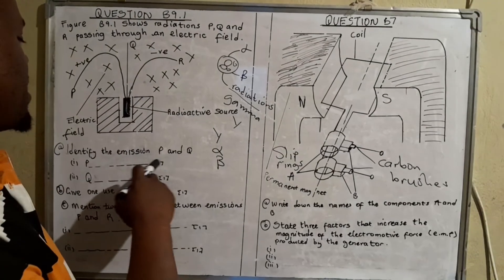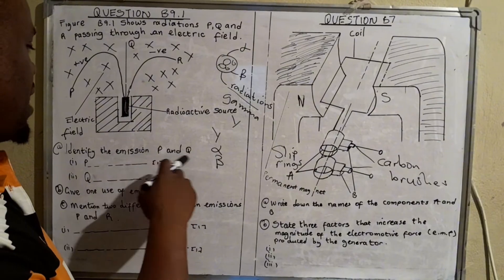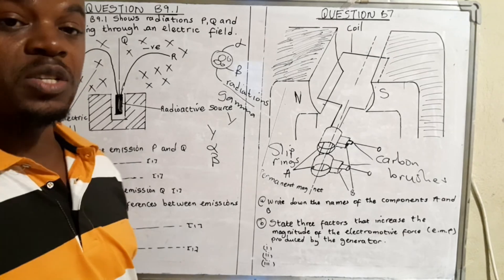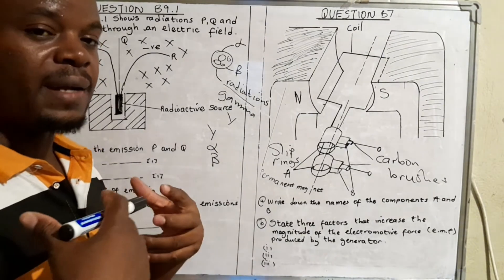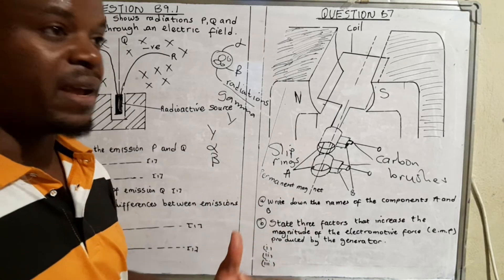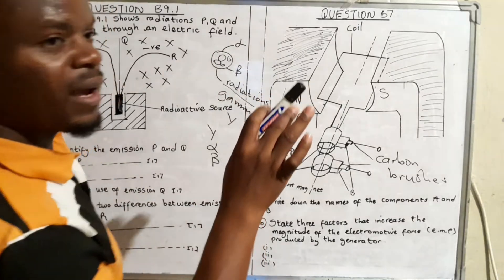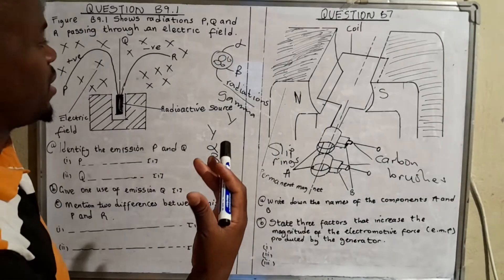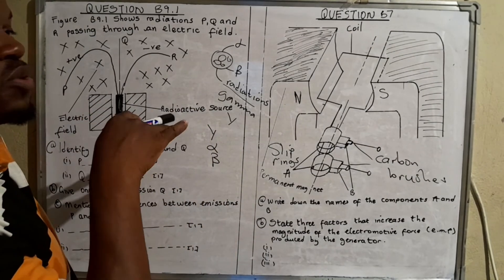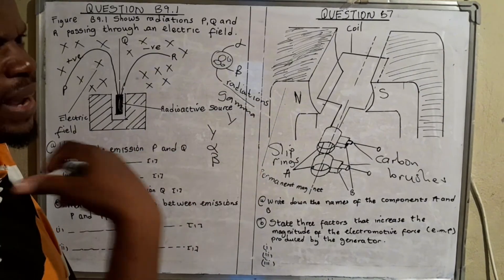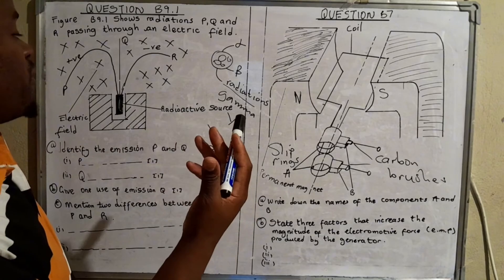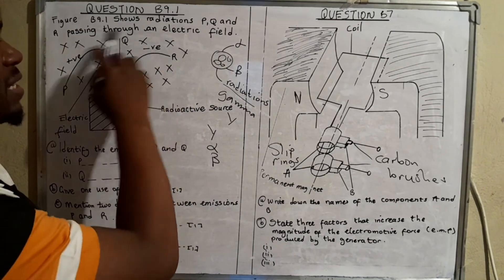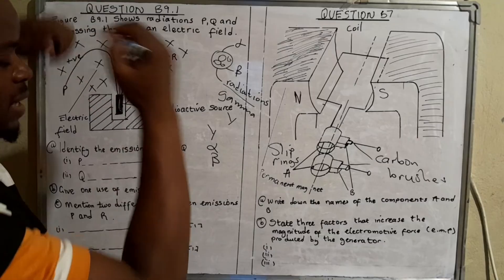We have alpha particles, beta particles, and gamma radiations. Those are the three radiations that are radiated when there's nuclear disintegration. You need to know the behavior of these radiations when they're exposed to a magnetic and electric field. When they pass through an electric field, this is how they behave. This is an electric field. You need to know that beta particles consist of electrons.